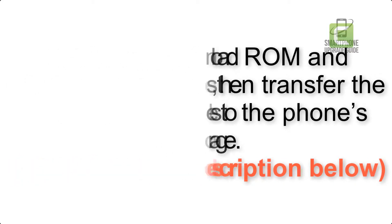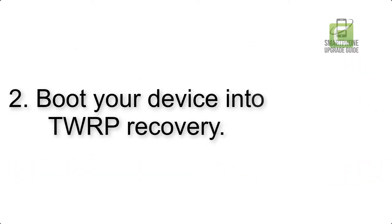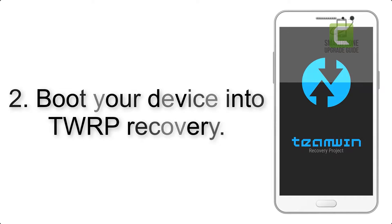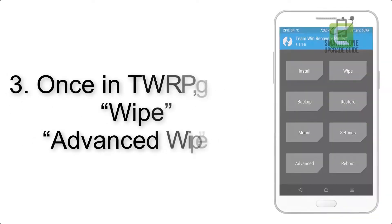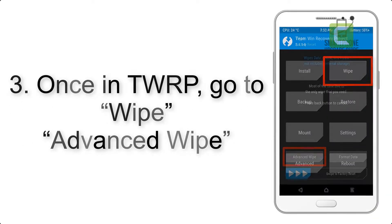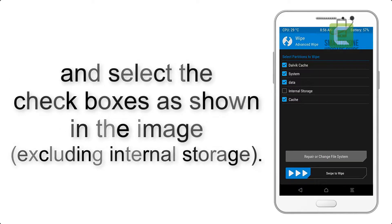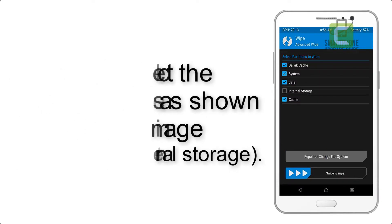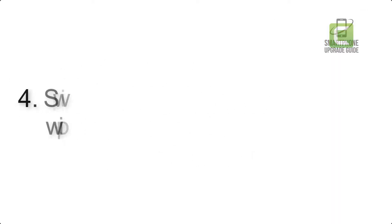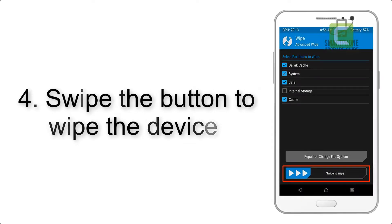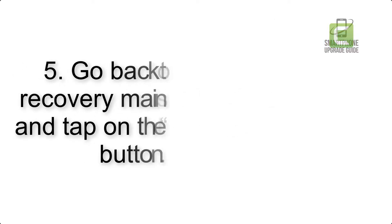Step 2: Boot your device into TWRP recovery. Once in TWRP, click on Wipe, then Advanced Wipe, and select the checkboxes as shown in the image, excluding internal storage. Step 4: Swipe the button to wipe the device.